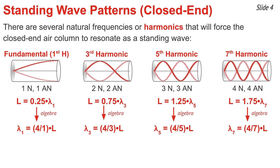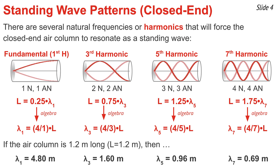I can use each of these wavelength equations to calculate the wavelength of each harmonic if I know the length of the air column. For instance, if the air column is 1.2 meters long, I can substitute 1.2 meters into my wavelength equations and calculate the values 4.8, 1.6, 0.96, and 0.69 meters (that last number being rounded). It's important to note that 1.6 — the wavelength of the third harmonic — is one-third the wavelength of the first. The wavelength of the fifth harmonic, 0.96, is one-fifth the wavelength of the first. And the wavelength of the seventh harmonic is one-seventh the wavelength of the first harmonic.